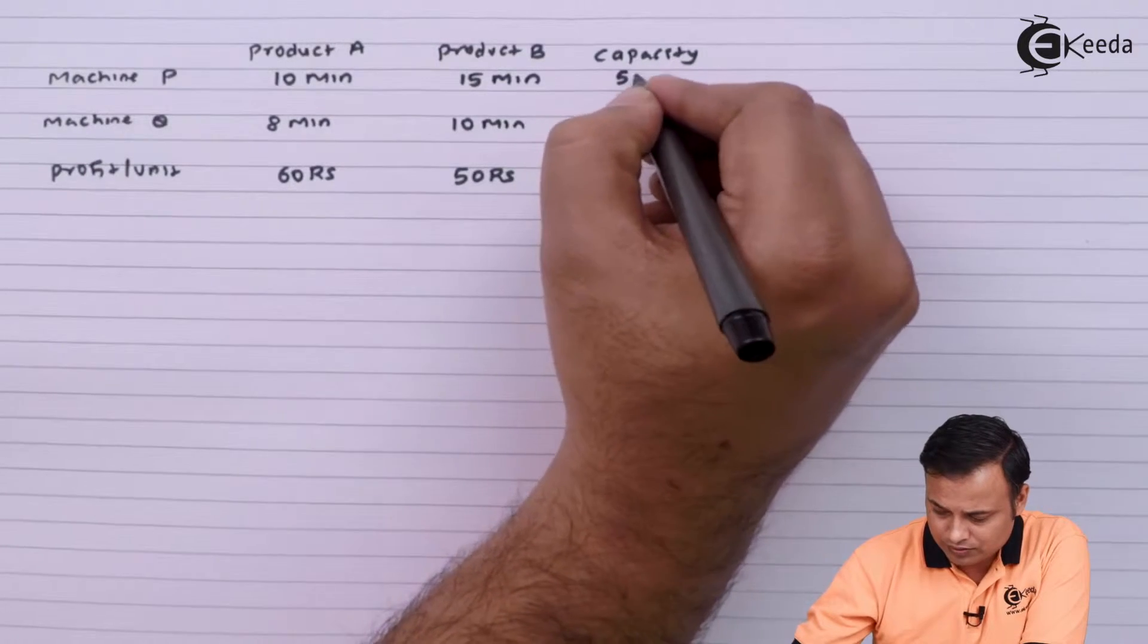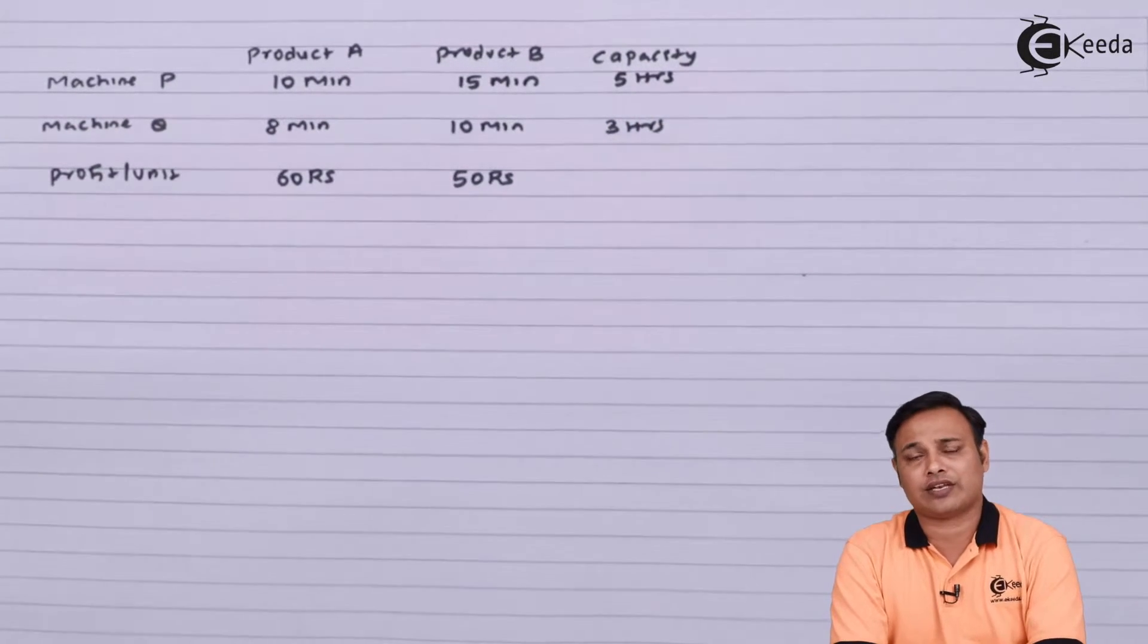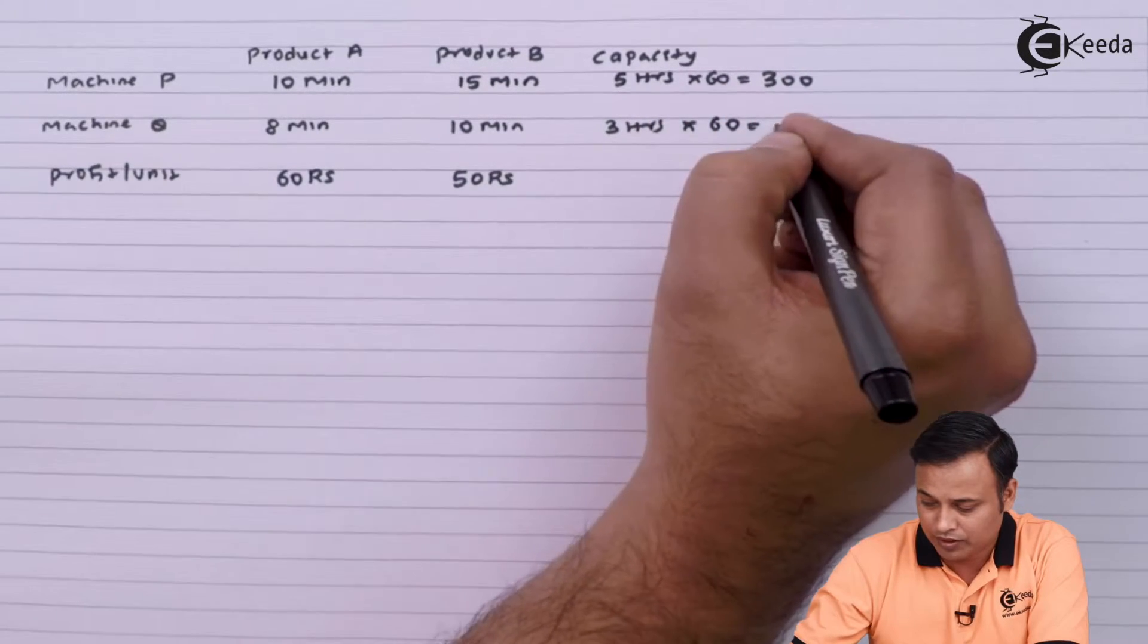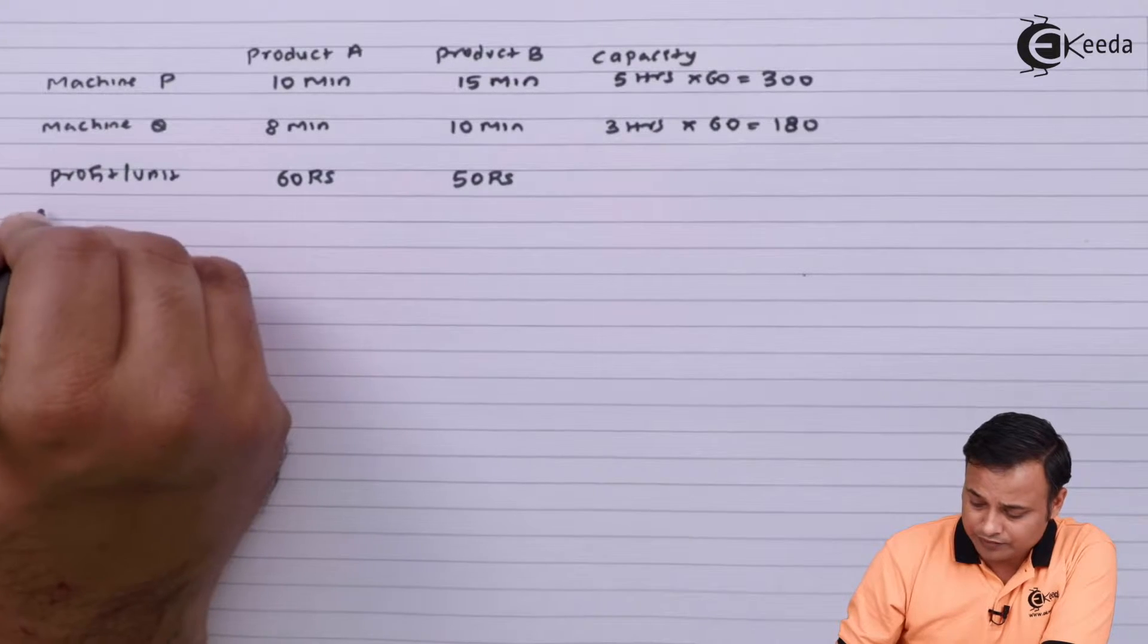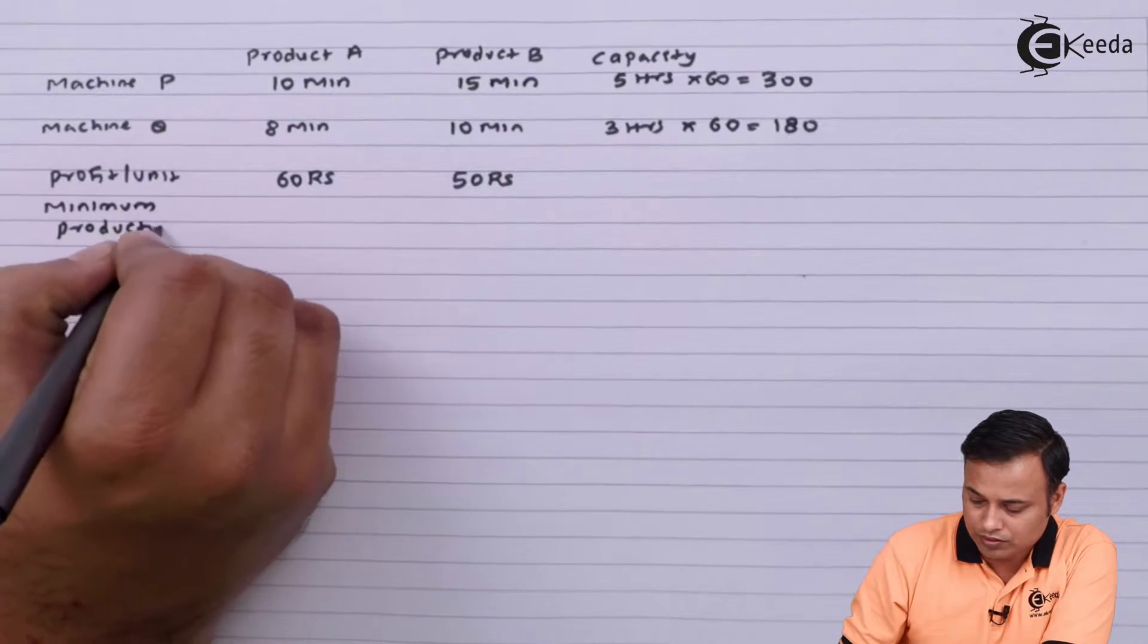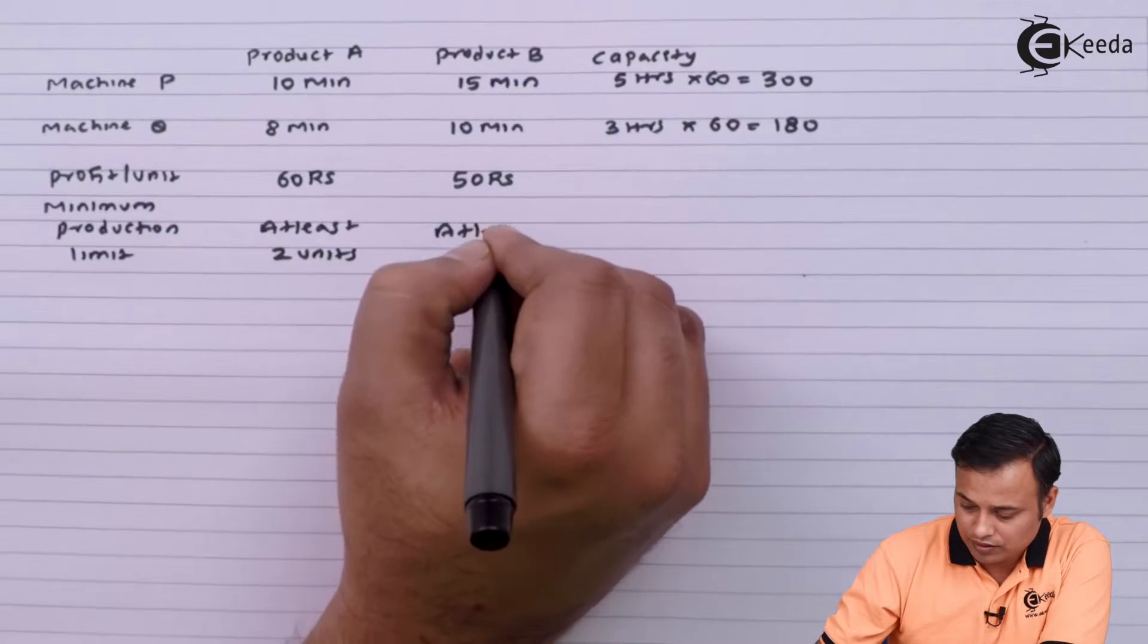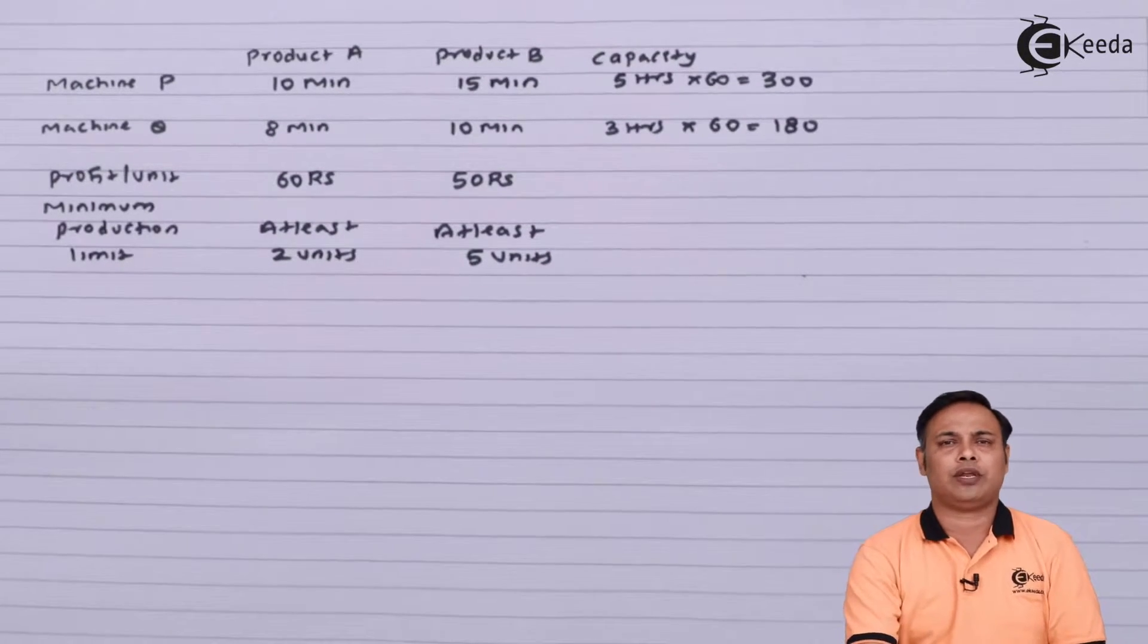Capacity: we have 5 hours for P and 3 hours for Q. Now since the time is given in hours, whereas the time per unit is given in minutes, I need to convert that time given in hours into minutes. So I will just multiply this by 60 to get 300 minutes. Multiply it by 60, it will be 180 minutes. Next we are given one more thing that there is a minimum production limit: there must be at least 2 units of A and at least 5 units of B.